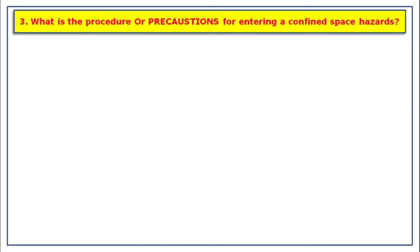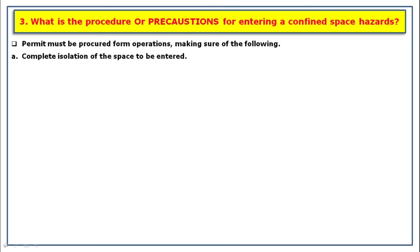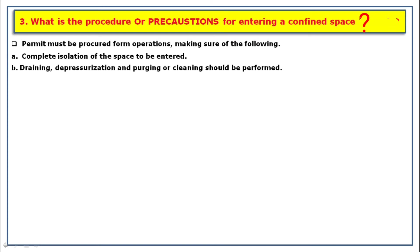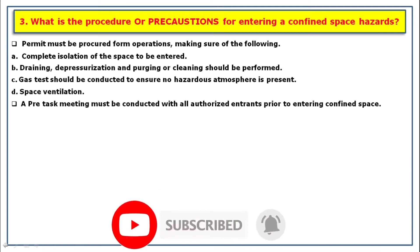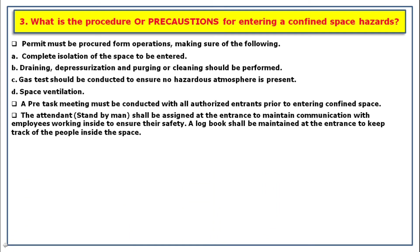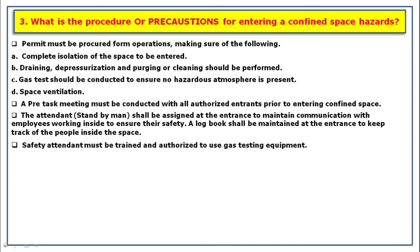The third question is: what is the procedure or precautions for entering a confined space? Before entering a confined space, the following precautions must be followed: a permit must be procured from the operations department; complete isolation of the space to be entered; draining, depressurization, and purging or cleaning should be performed; a gas test should be conducted to ensure no hazardous atmosphere is present; space ventilation; a pre-task meeting must be conducted with all authorized entrants prior to entering. A standby attendant shall be assigned at the entrance to maintain communication with employees working inside and ensure their safety.